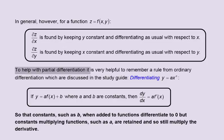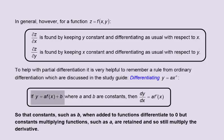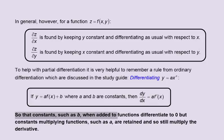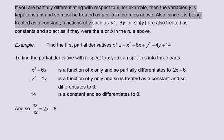To help with partial differentiation, remember a rule from ordinary differentiation: if y equals a·f(x) plus b, where a and b are constants, then dy by dx equals a multiplied by f′(x). Constants added to functions differentiate to 0, but constants multiplying functions are retained. When partially differentiating with respect to x, the variable y is kept constant and treated as a constant like a or b. Functions of y, such as y squared, 8y, or sin y, are also treated as constants and act as if they were a or b in the rule above.